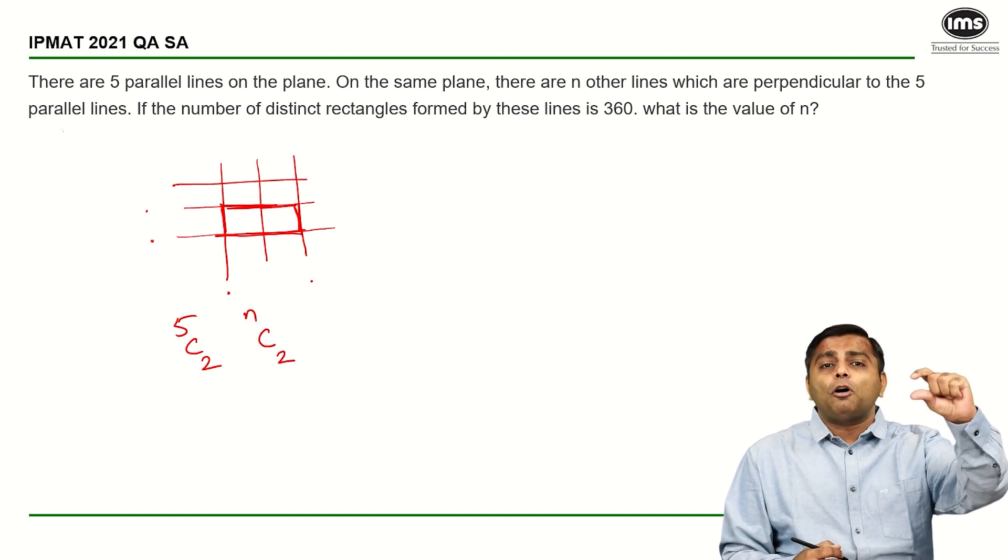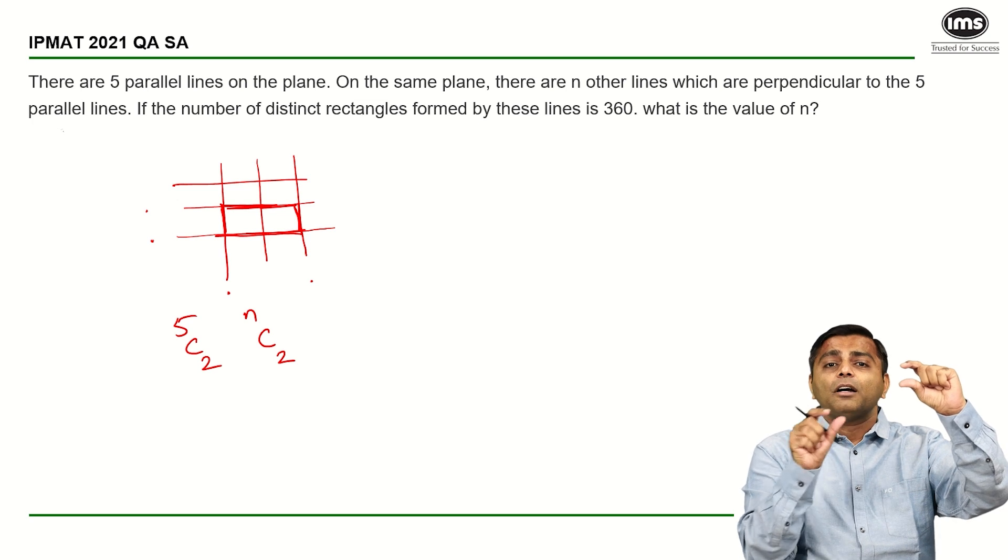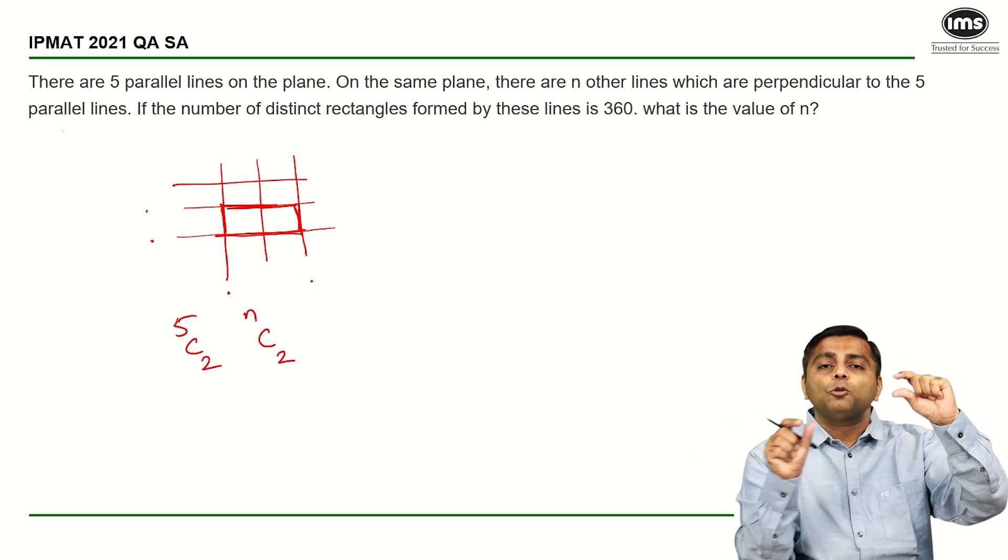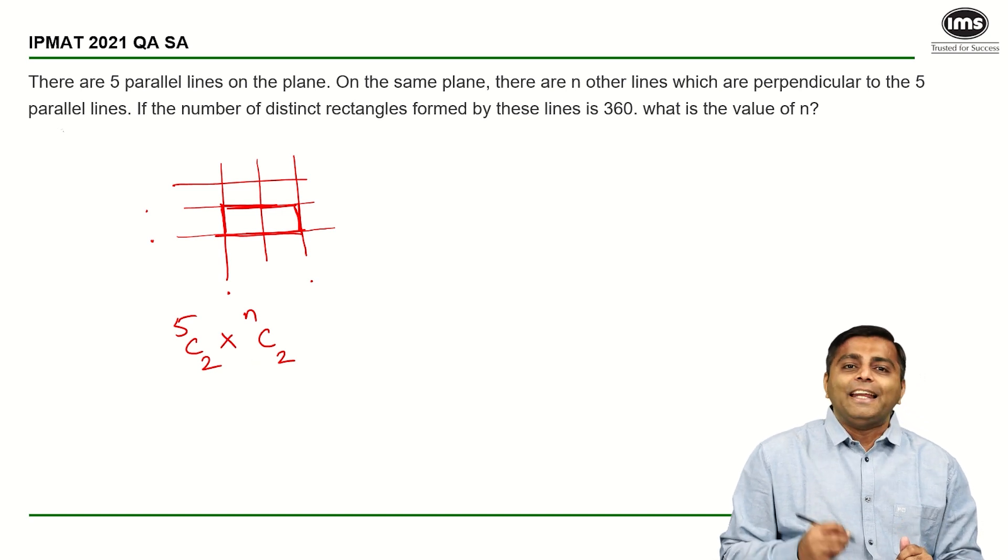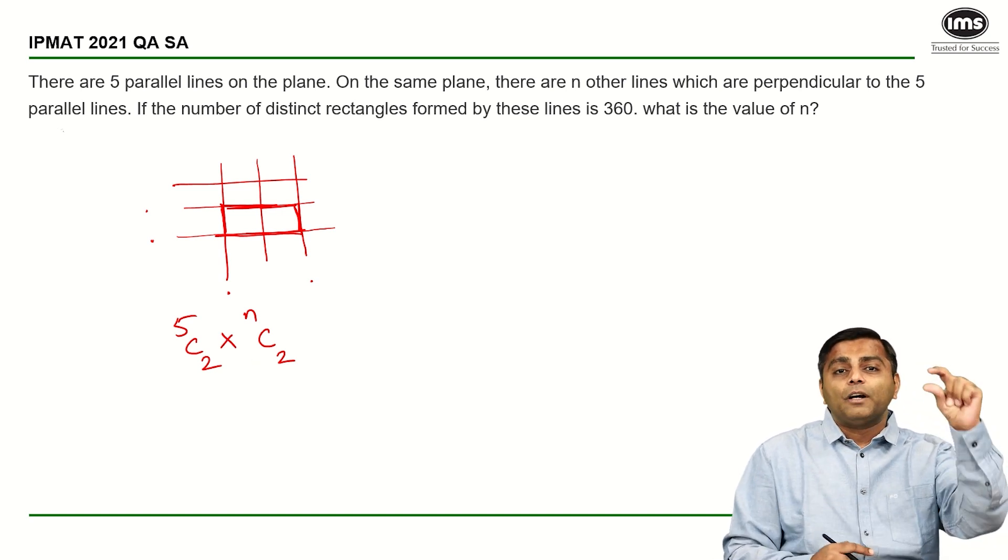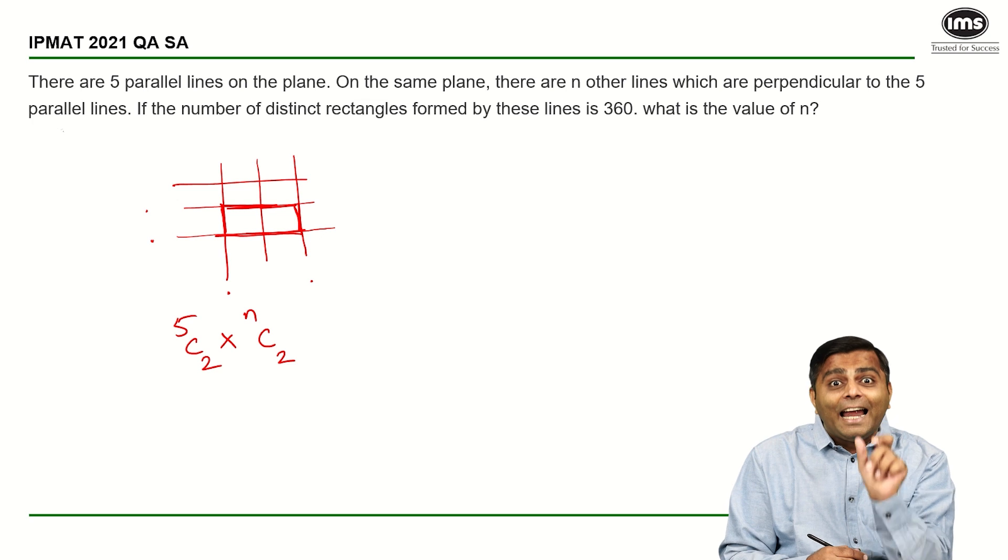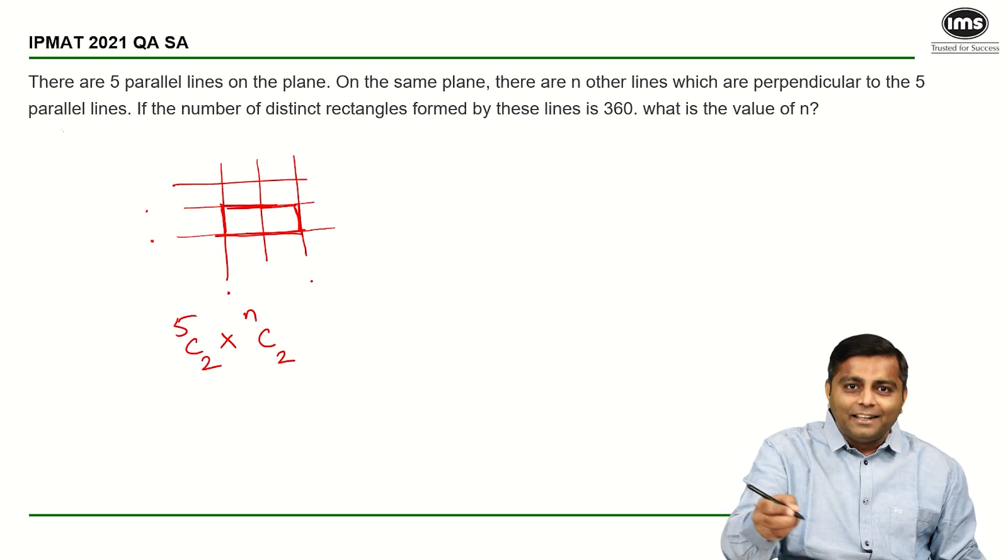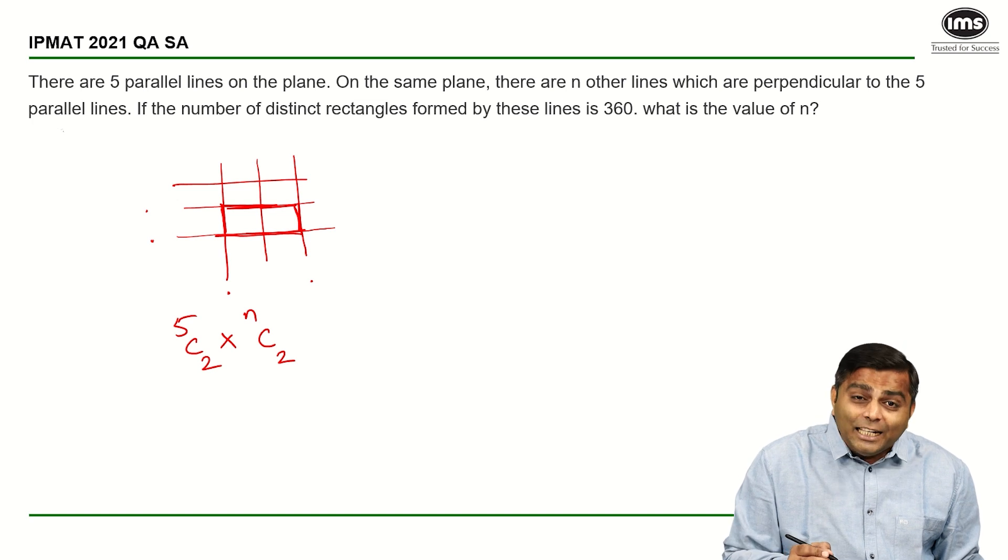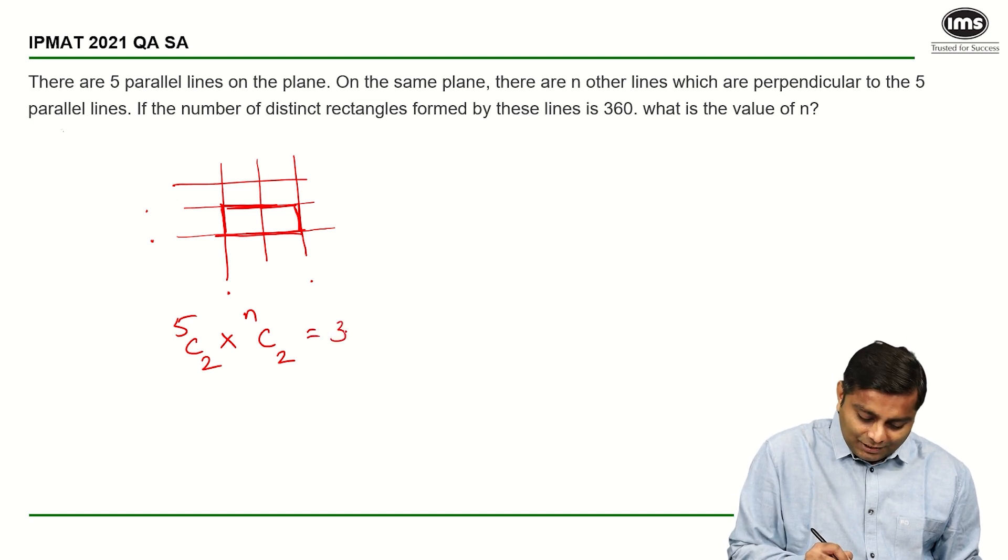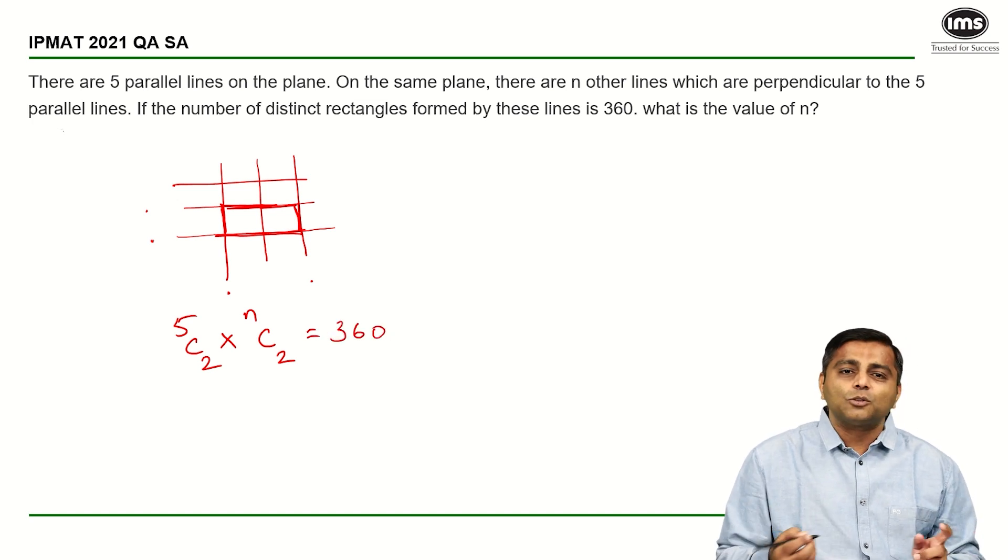For every two horizontal lines you pick up, you can have multiple two sets of two vertical lines. So it is going to be 5C2 into NC2. We need and, right? We need two vertical lines, two horizontal lines and two vertical lines. So it is and. And in P and C, you should know is multiplication. So 5C2 into NC2 gives me 360. Let us just quickly solve this.